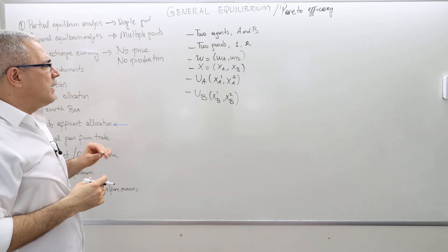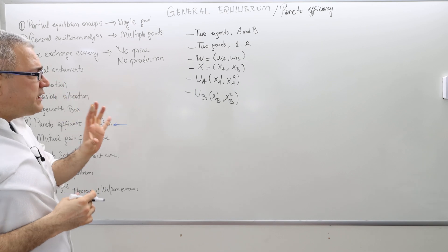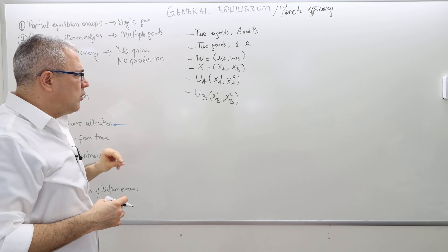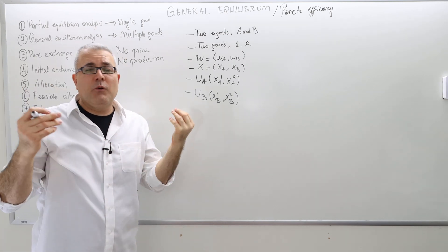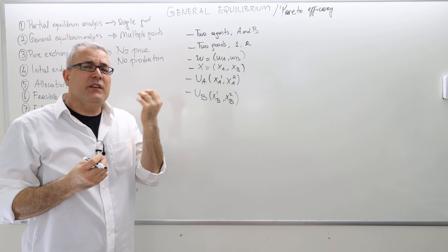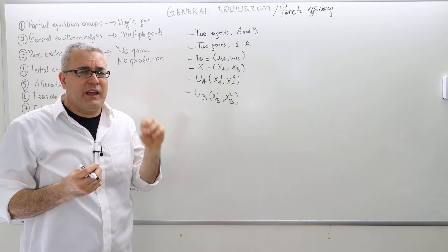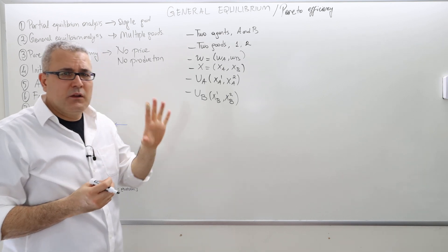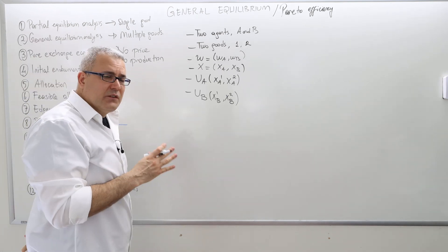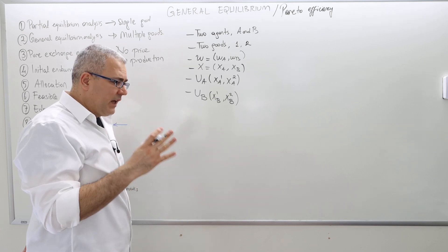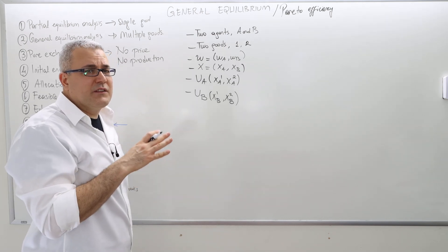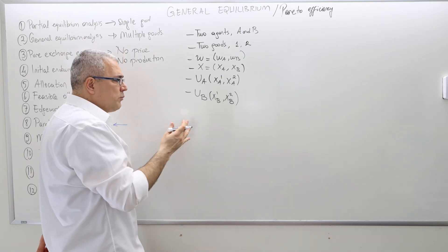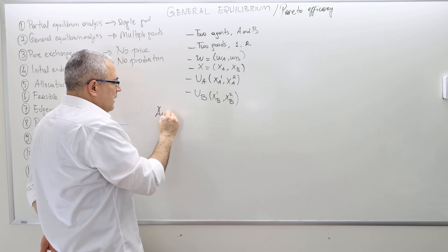So what does that mean? Once you draw the Edgeworth box, in the previous video we talked about how to answer the question: is there a mutual gain from trade at some particular allocation? We can ask that question for any allocation. If the answer is yes, the allocation is not Pareto efficient. If the answer is no, the allocation is Pareto efficient.